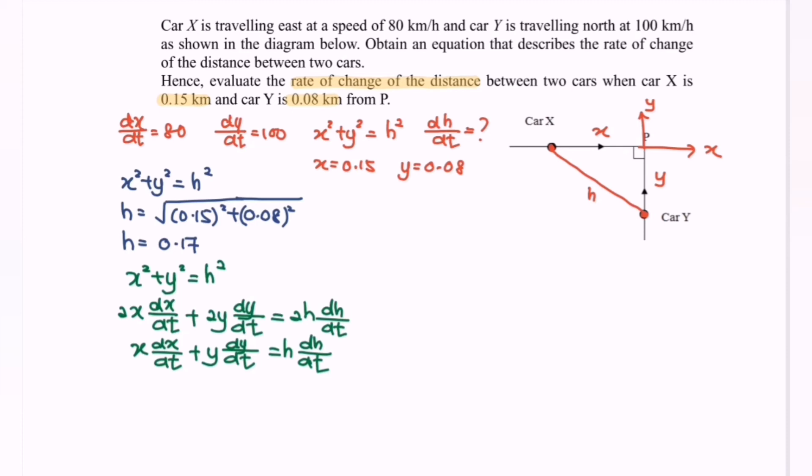And finally, we have H equals 0.17. So we will have 0.15 multiplied with 80 plus 0.08 multiplied with 100 equals 0.17 multiplied with dh/dt.